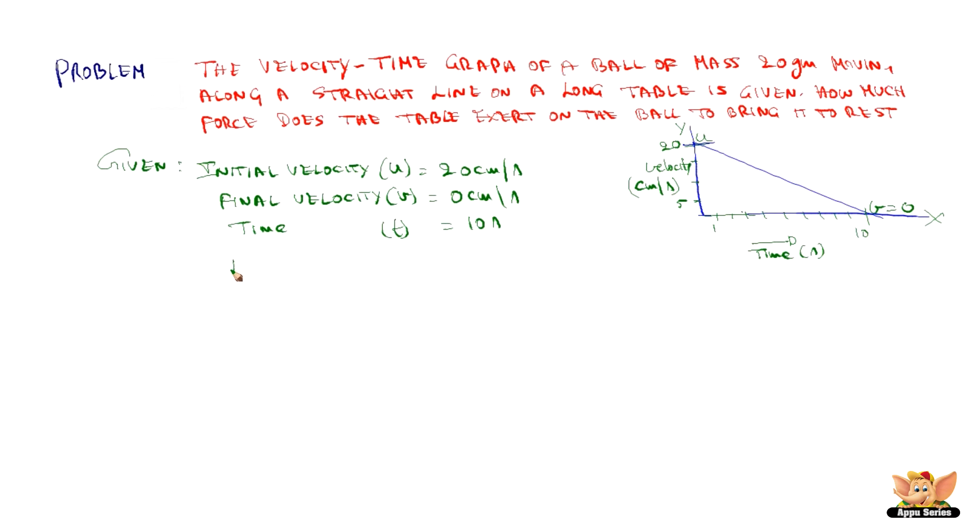So we will find out the acceleration from this data, as to find force we need acceleration. So acceleration a is equal to v minus u by t, which is 0 minus 20 by 10, which is minus 20 by 10, which is minus 2 cm per second square, which on conversion to meter we will get minus 2 by 100 m per second square, which is minus 1 by 50 m per second square, since 1 cm is equal to 1 by 100 m.